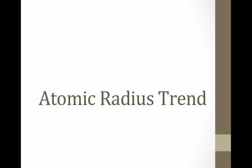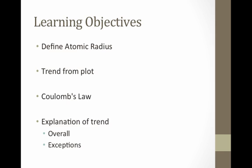This video is the first of three that's going to discuss the trend of atomic radius, or the trends in general, as well as provide a scientific explanation for why the patterns we see actually occur. Quick rundown of the learning objectives. We're going to quickly review the definition of atomic radius. We'll then identify the actual trend from the data you plotted in class.